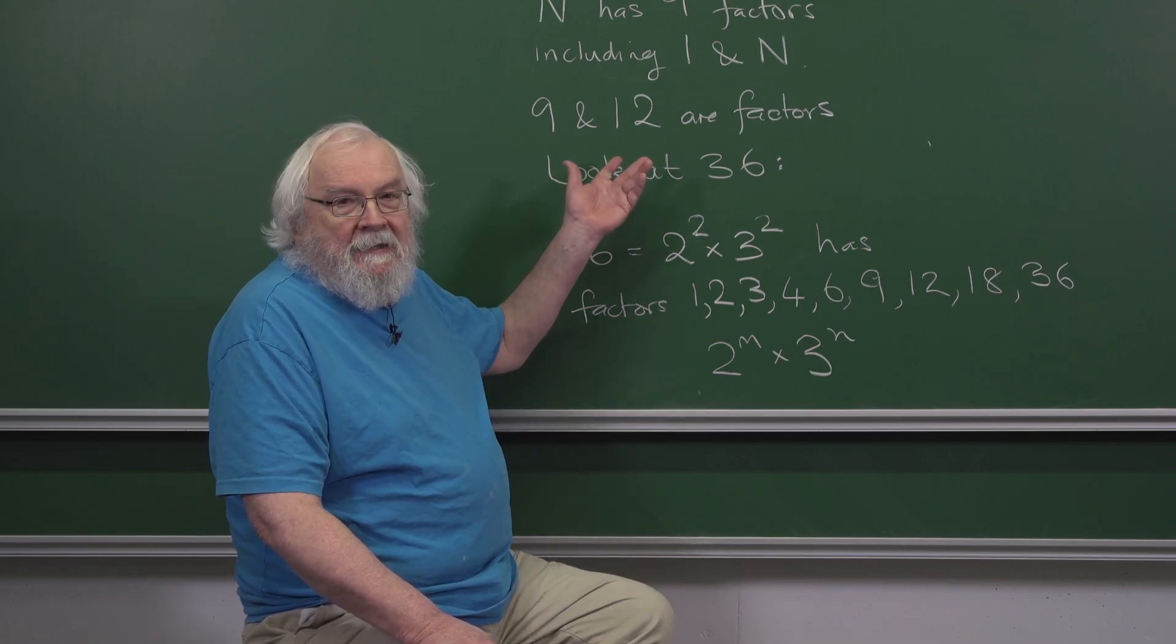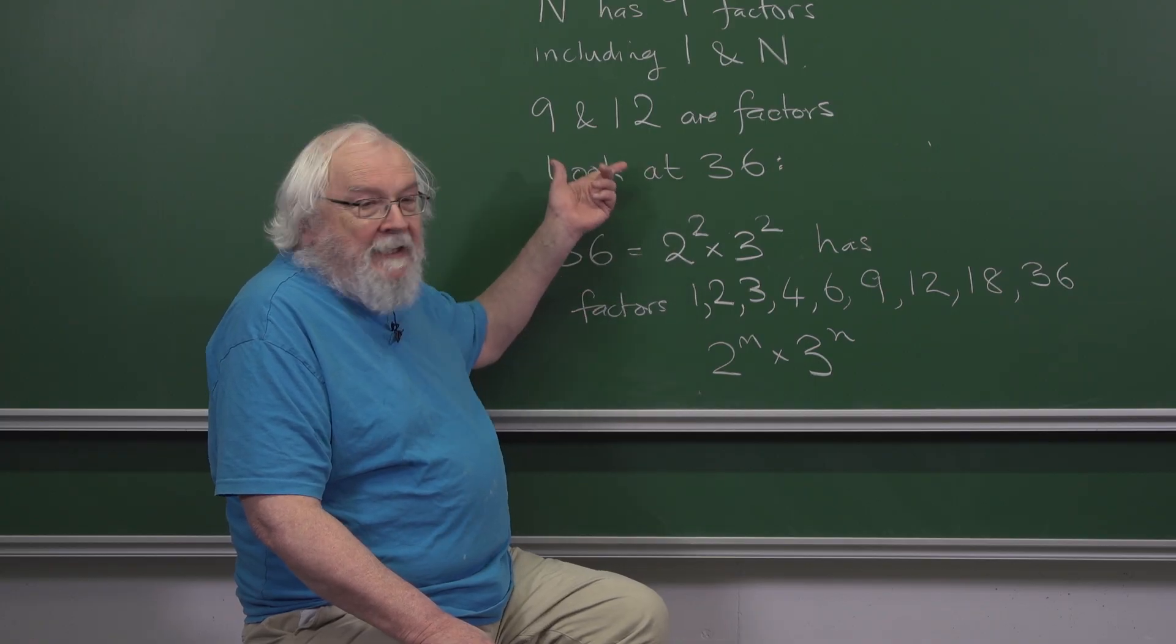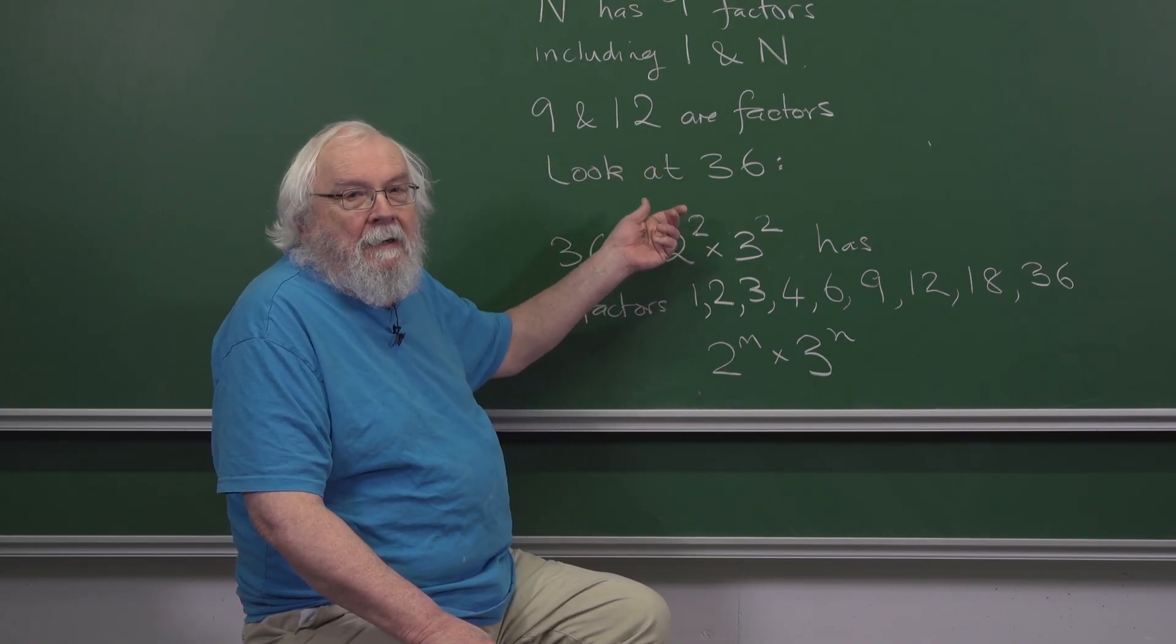If we have a number satisfying these conditions, then it is going to have to be divisible by 36.